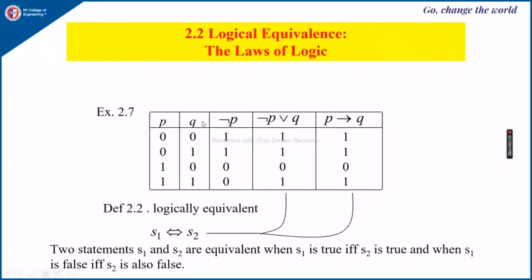Here we can see the logical equivalences — that is, laws of logic. If P and Q are propositions with truth values 0,0 / 0,1 / 1,0 / 1,1, then NOT P will be 1, 1, 0, 0, which is the negation of the P column. NOT P OR Q will be 1, 1, 0, 1. We also know that P implies Q is false only when P is true and Q is false. From these two columns we can see that P implies Q is equivalent to NOT P OR Q. We write this as a logical equivalence, where statement S1 is equivalent to statement S2.